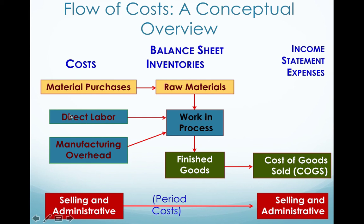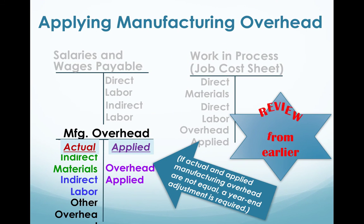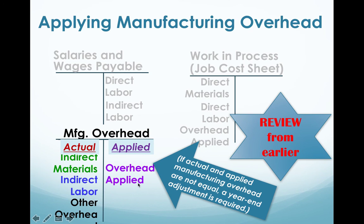Now we've included selling and administrative costs, which never get included in the manufacturing costs. Manufacturing costs are up here, and selling and administrative are period costs down here — never included in manufacturing costs. The manufacturing overhead T-account shows actual indirect material, labor, and other overhead listed at actual cost on the left-hand side as debits. As they get applied, they move out as overhead applied into another account, and the balance is what we examine to determine over- or under-applied overhead.